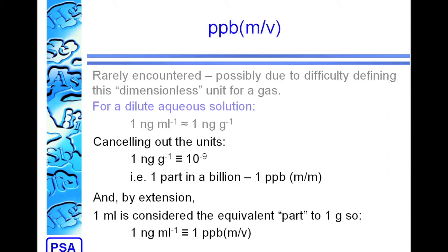By extension, as we've said, 1 nanogram per mil and 1 nanogram per gram are approximately the same thing. We can say that 1 mil is the equivalent part to 1 gram, so 1 nanogram per mil is equivalent to 1 PPB mass-volume. And this definition of 1 PPB mass-volume has been extended from aqueous solutions into a wide range of other solutions, even though the densities don't match, so you don't end up with the approximation between PPB mass and PPB mass-volume.